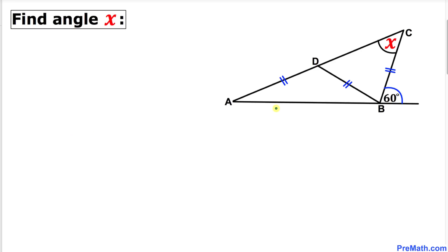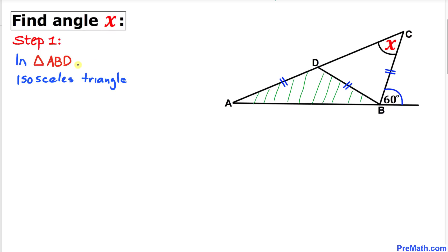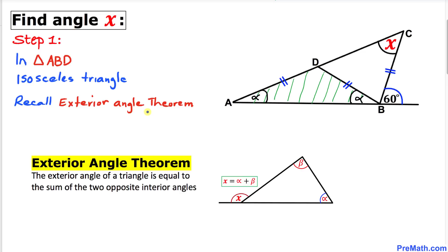Let's focus on triangle ABD. We know this is an isosceles triangle since this side leg equals this side leg. So therefore this angle is going to equal this angle. If I call this angle alpha, then this angle is alpha as well. Now let's recall the exterior angle theorem — angle D is our exterior angle, equal to the sum of the two opposite interior angles. So this exterior angle equals alpha plus alpha, which is 2 alpha.